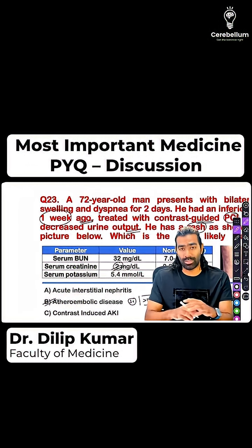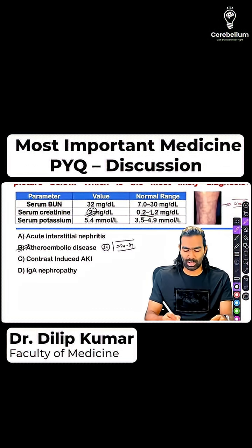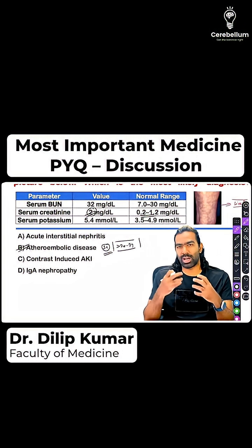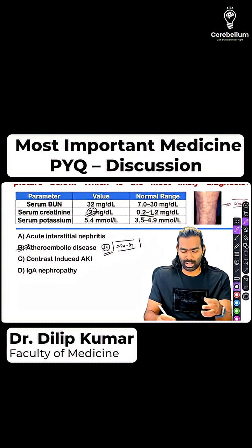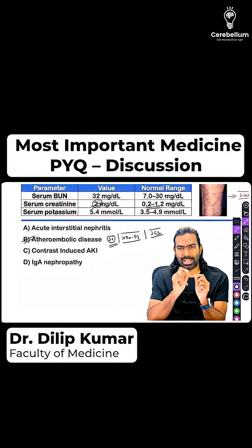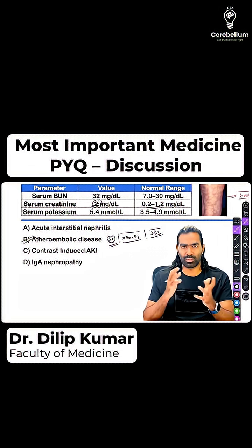The catheterization procedure about one week ago would have ruptured some atherosclerotic plaques along the way, producing cholesterol emboli resulting in atheroembolic disease. Patients may have symptoms like amaurosis fugax, blue cyanotic toes with intact pulse, and livedo reticularis rash. They will also have low C3, and biopsy will show characteristic needle-like empty spaces — cleft-like spaces inside the arterioles and small to medium vessels.